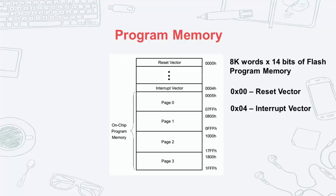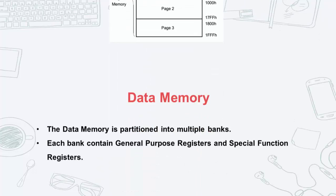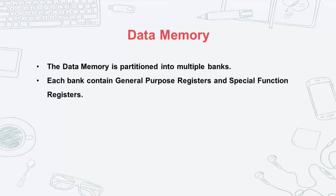We are going to talk more about interrupts later in the series. Next is the data memory. This is a volatile memory, which means that once the power is taken out from the system, any information written to this memory is lost. Data memory is partitioned into multiple banks. Each bank has a general purpose register and special function registers. SFRs control the MCU and its available peripherals.